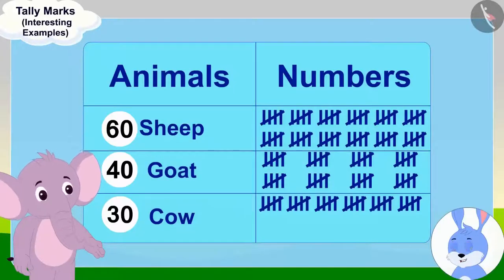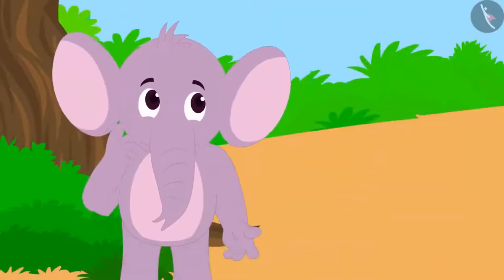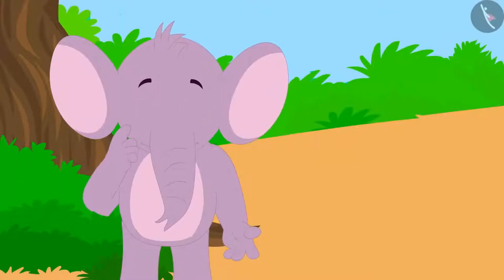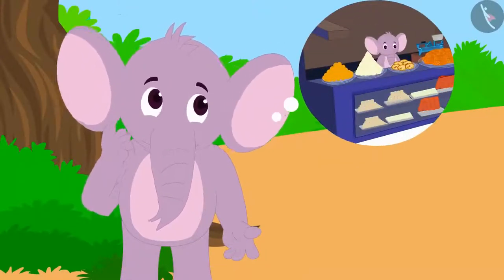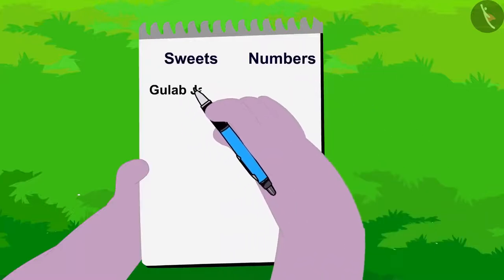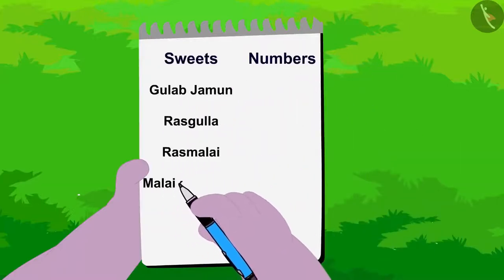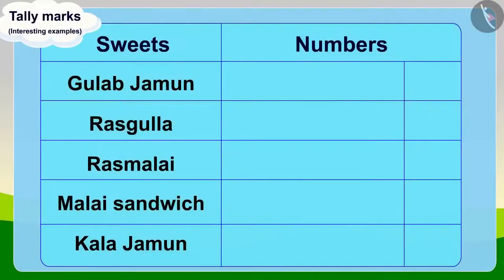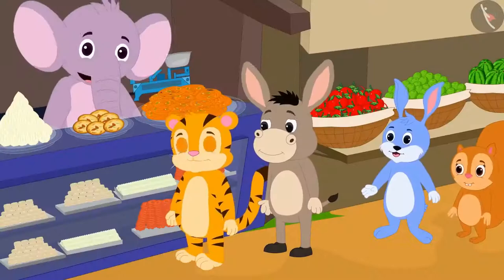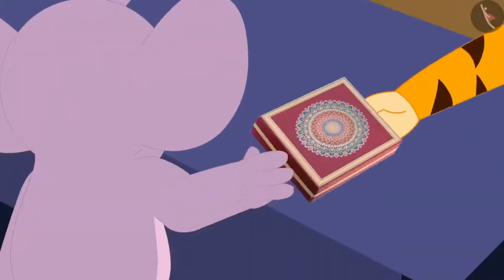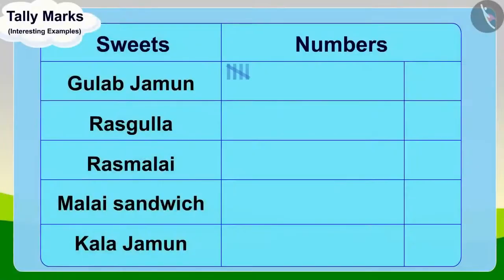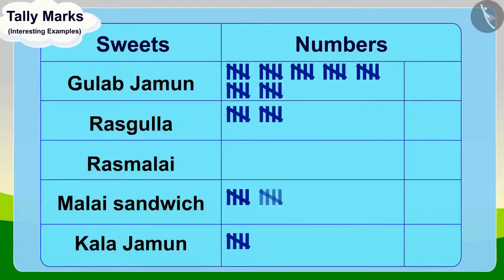Appu is very excited to have learned about tally marks from Bunny. He thought, why not use tally marks to know more about the sale of sweets in his shop? He immediately put the names of all the sweets sold in his shop in a table. As his sweets were sold, he continued to make tally marks in front of those sweets. At the end of the day, Appu's table was filled.